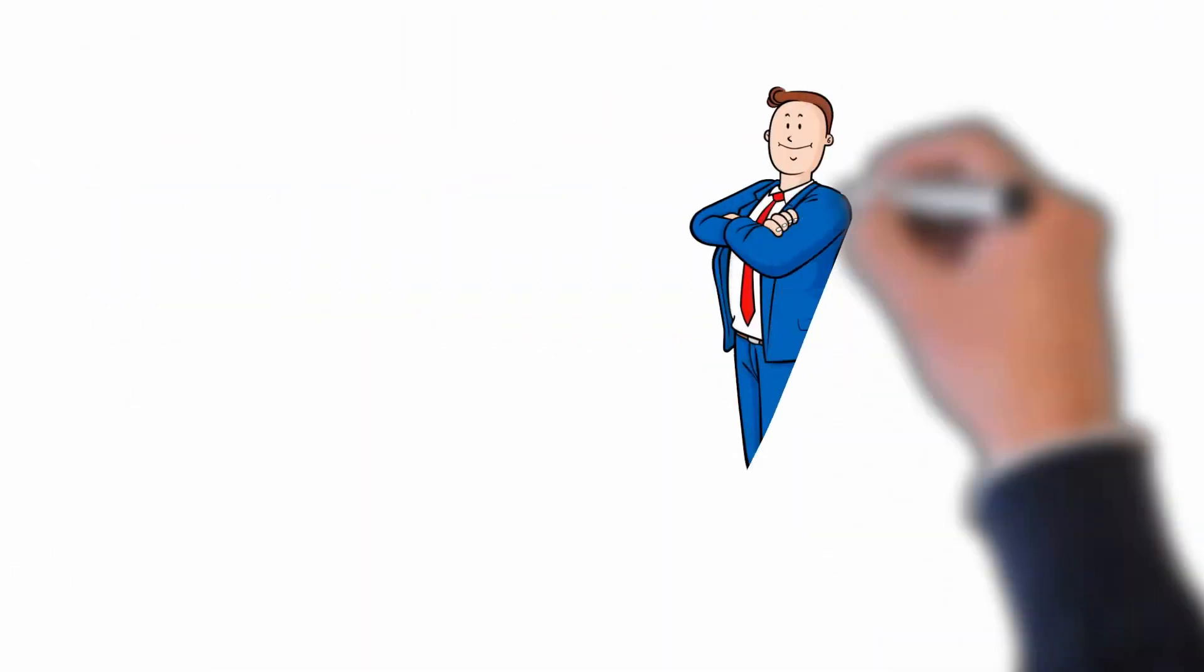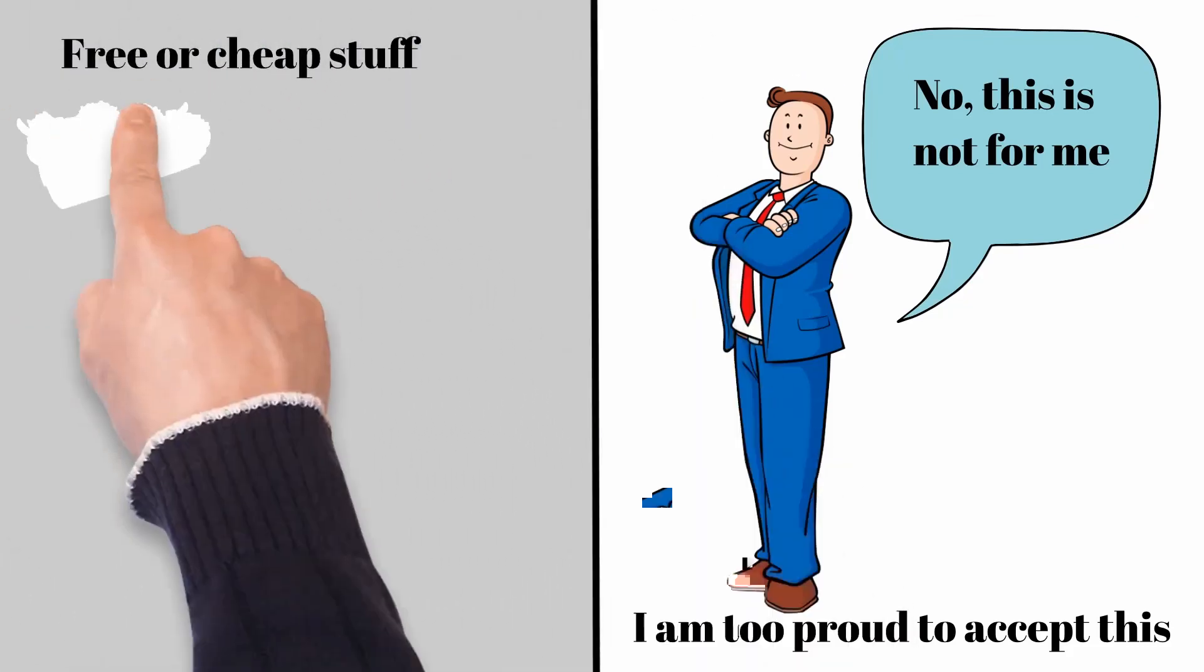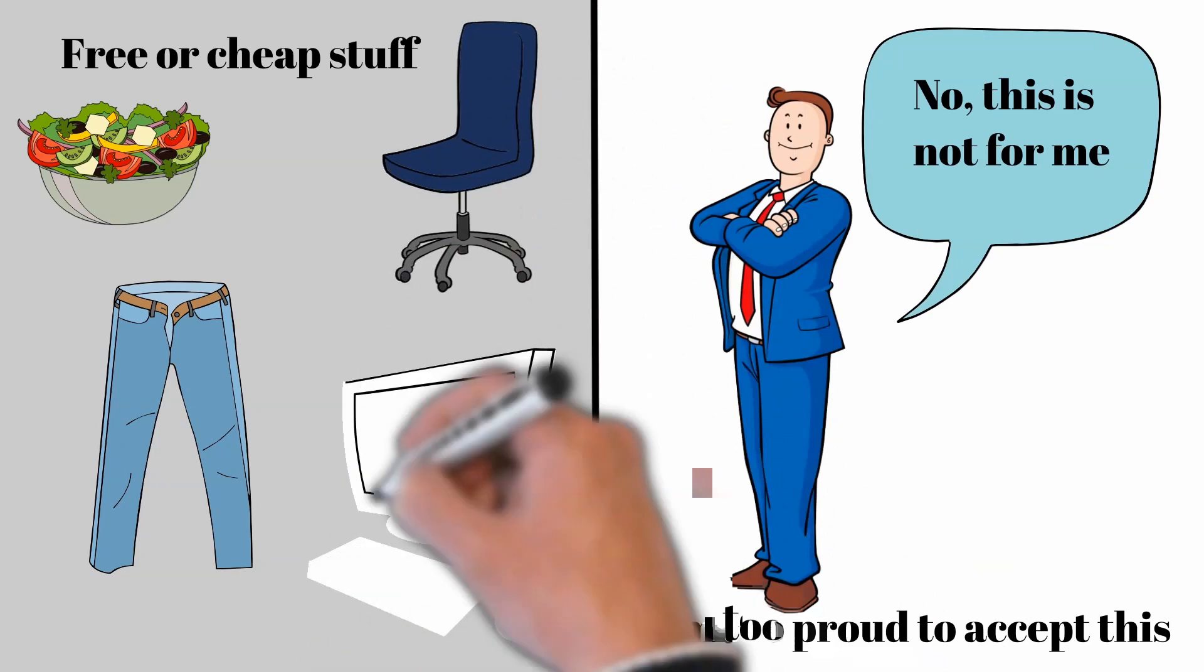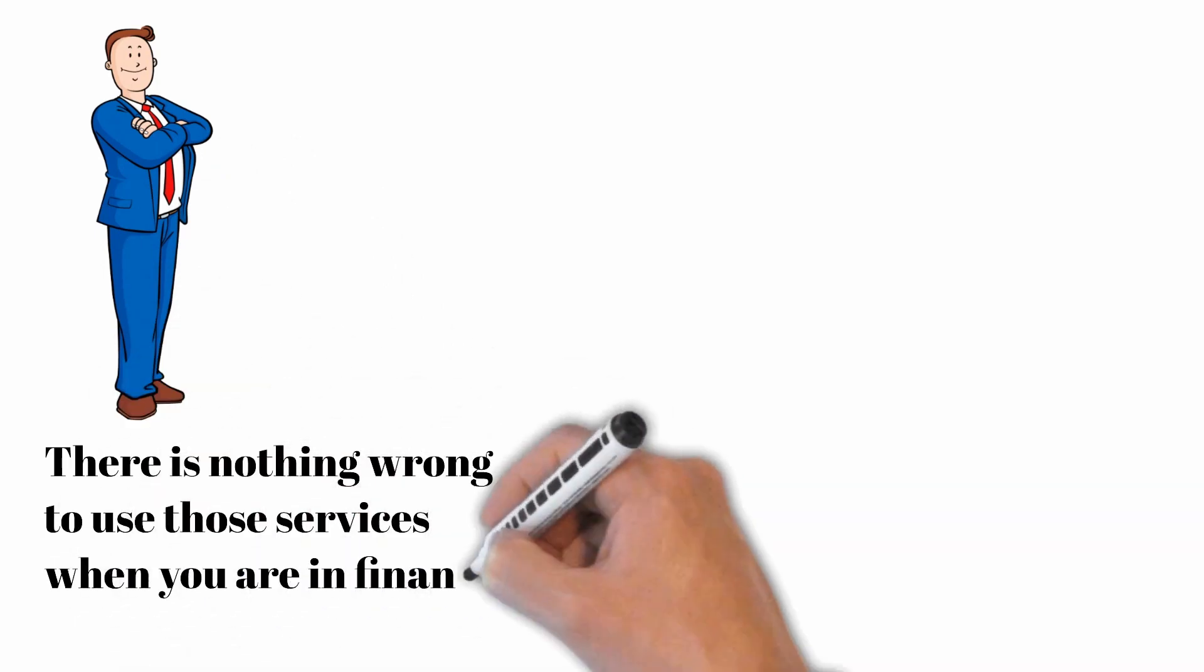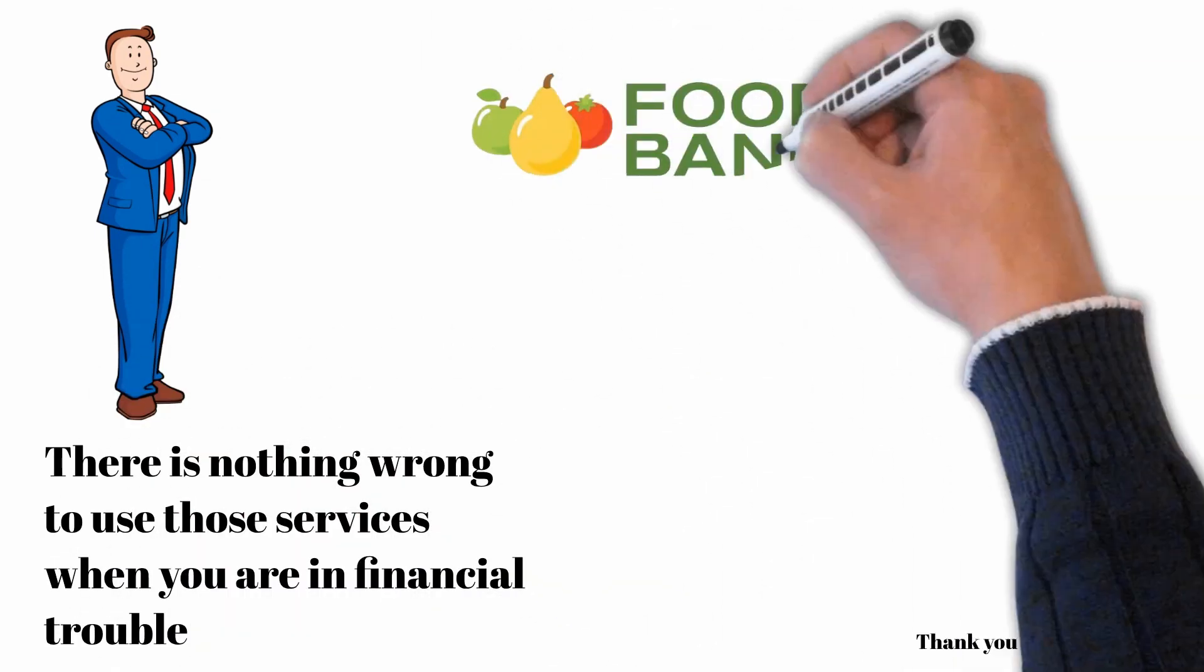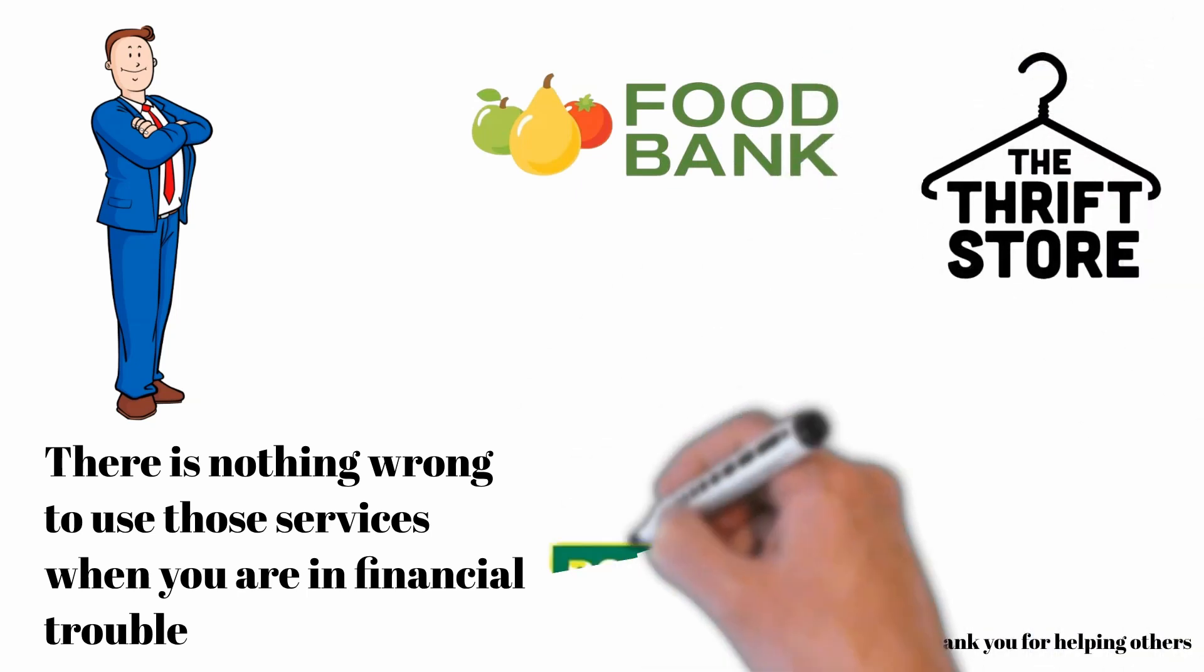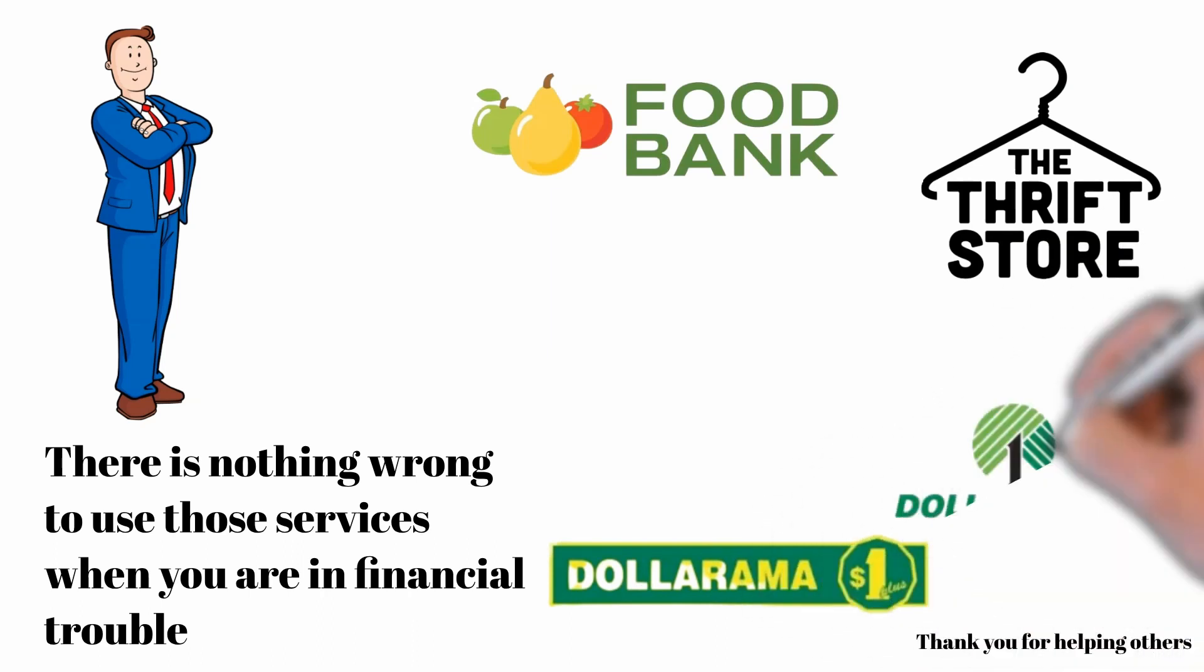And the last point for today is to let go your pride for a period of time. Pride aside, take every handout you can get. Remember, you are in financial trouble and it is not the time to be ashamed. Take all opportunities available to get out of trouble. Look at free services around you. For example, food banks. Get free or cheap stuff at places like thrift store, dollar store, dollar tree, etc.